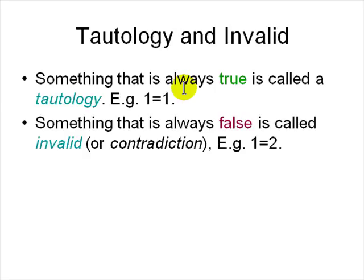And something like 1 equal to 2 is false. It's called a contradiction or invalid. Many of these words come from Latin where logic was studied 2000 years ago. So it's not a new topic or something. It's well known.